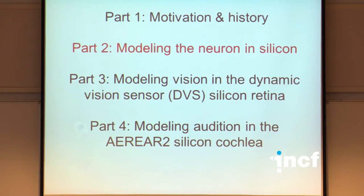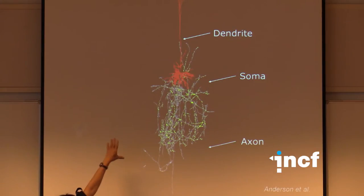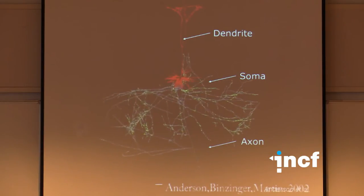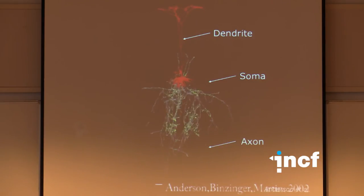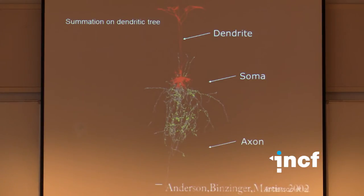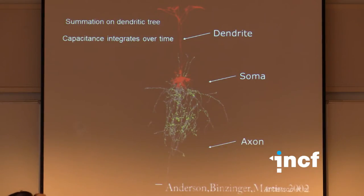Now I'll go into more detail about how transistors are constructed in silicon. First, let me briefly revisit neurons. A neuron has a dendrite, soma, and axon — data from John Anderson and Kevin Martin at our institute. The dendrite performs summation: it sums all charge coming in from spikes hitting the dendritic tree. The dendritic tree has cables with capacitance, so charge is integrated over time.